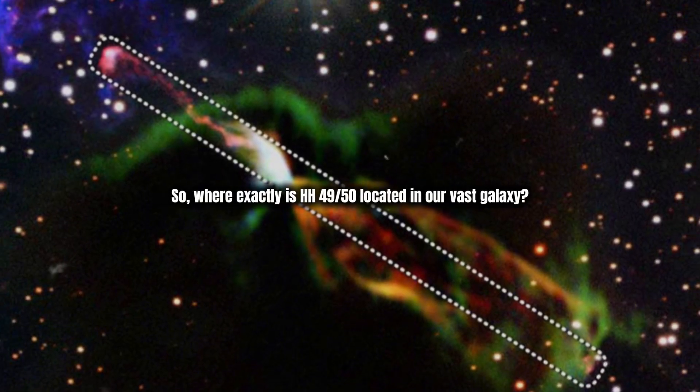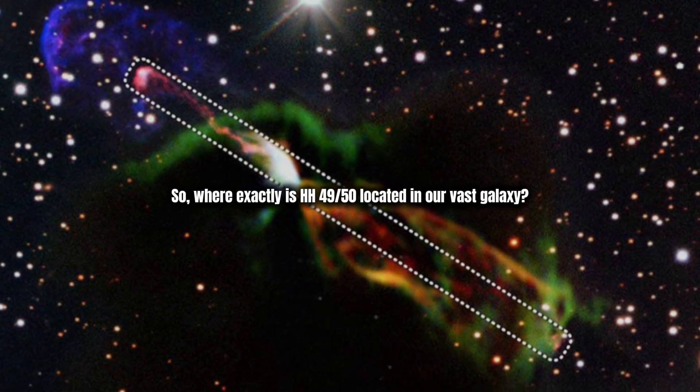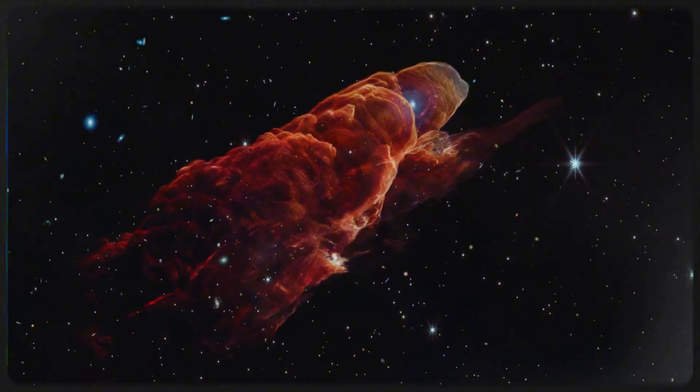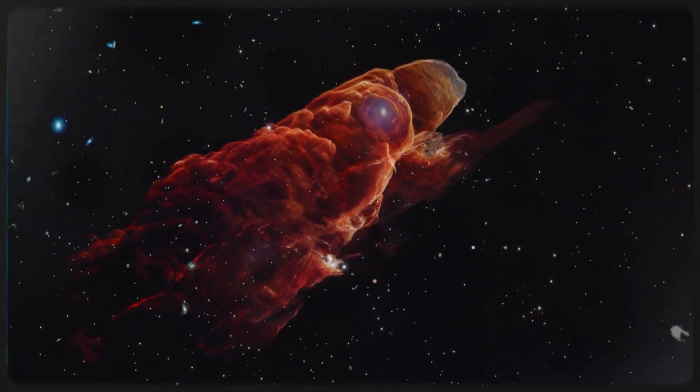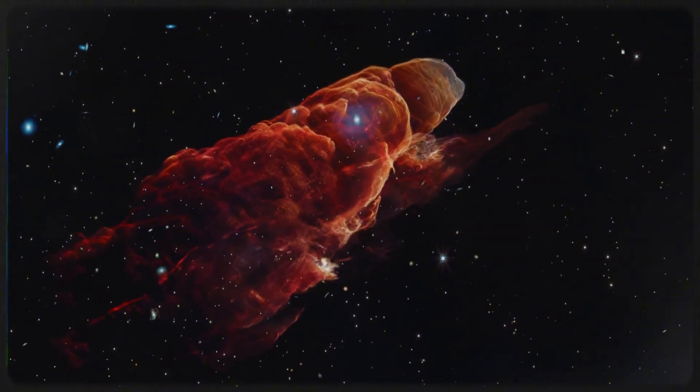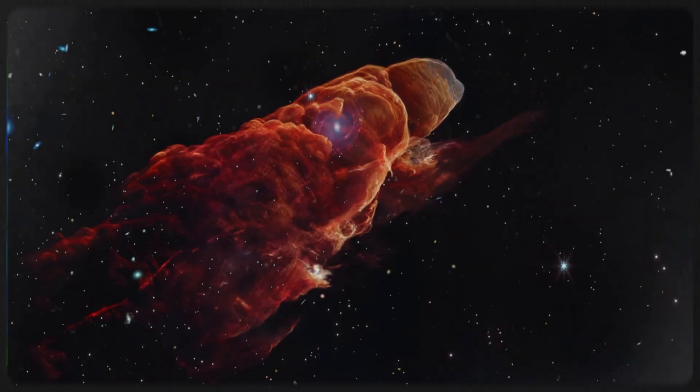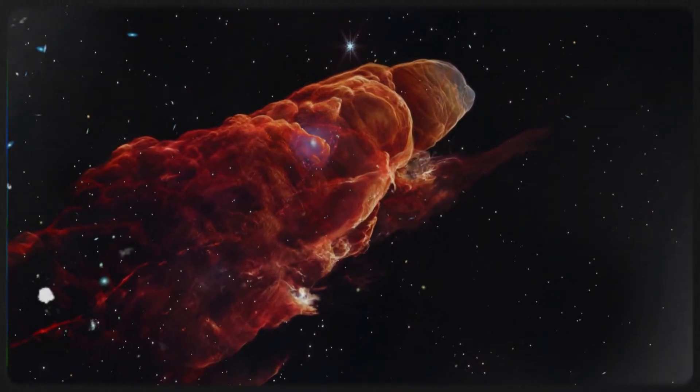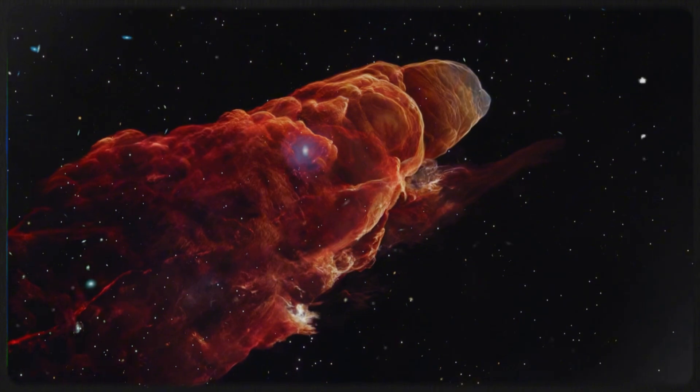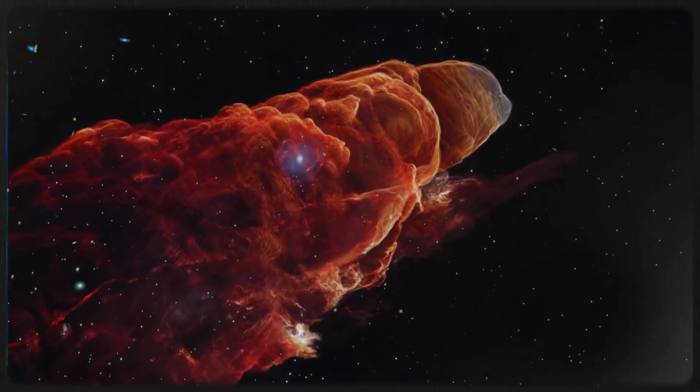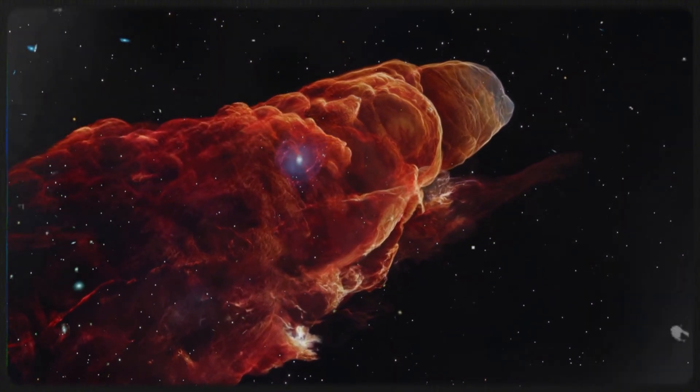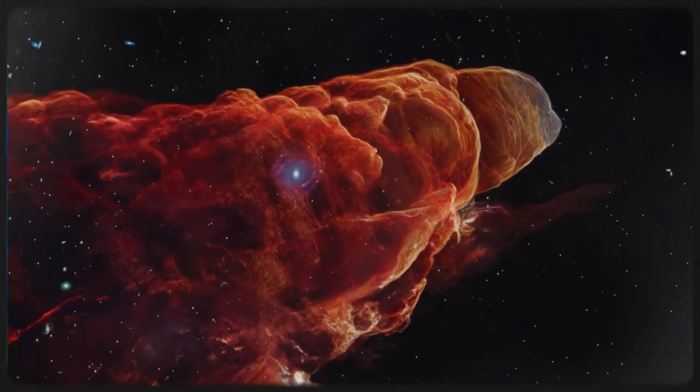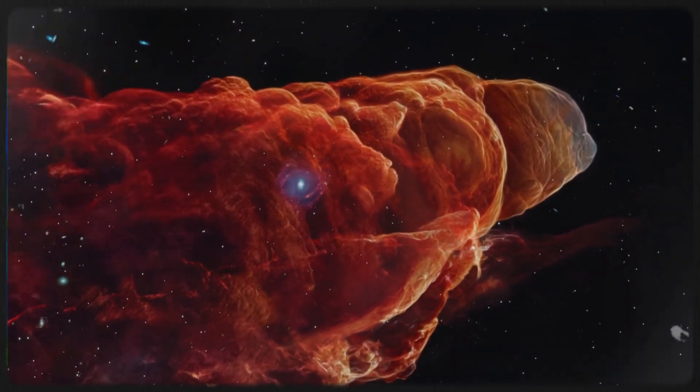So, where exactly is HH49 by 50 located in our vast galaxy? It's nestled within the Chameleon I-Cloud complex, a region of active star formation that is one of the closest to our solar system. This area is bustling with the birth of low-mass stars, much like our own sun. In fact, astronomers believe that this very cloud complex could be the birthplace of stars similar to ours, and perhaps even the very environment in which our sun formed billions of years ago.